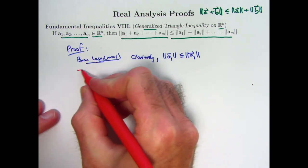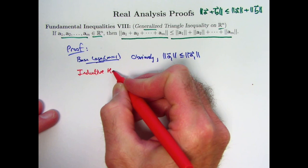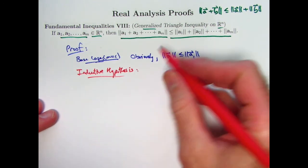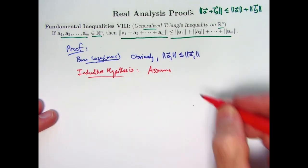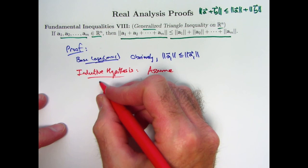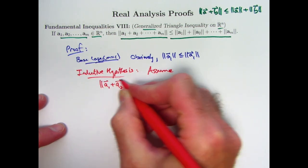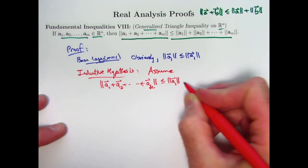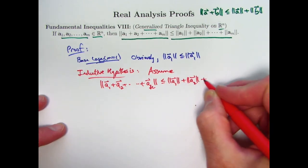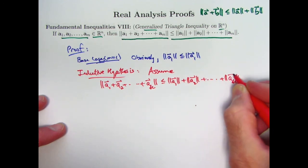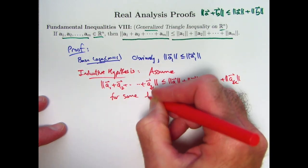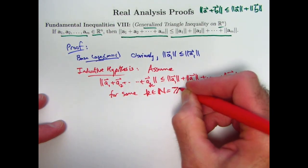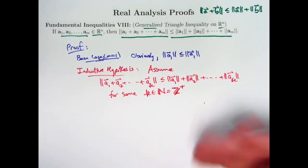What is the inductive hypothesis? It's that what we want to show is true for some fixed positive integer. Assume, let's not use the letter m, let's use a different letter like k. Assume that this inequality, the generalized triangle inequality, is true when I have k terms in the sum for some fixed but unspecified natural number k. For some k in the set of natural numbers 1, 2, 3, 4, 5, 6, etc. You can also think of this as the set of positive integers, z plus. You don't have to write both things like I'm doing, you could just write one or the other.